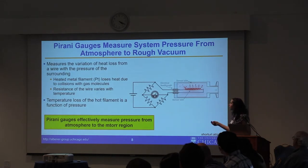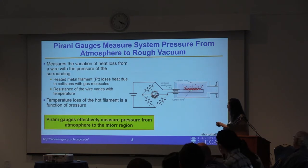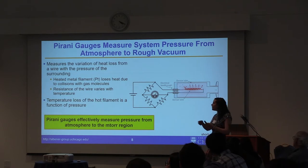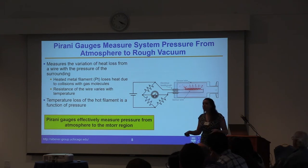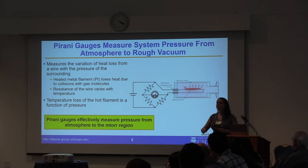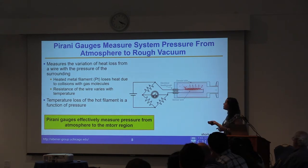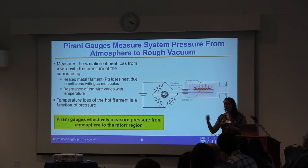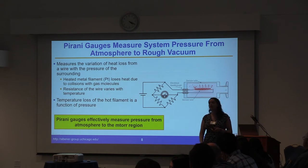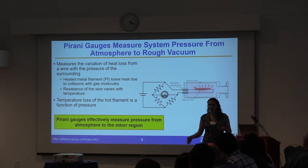The Pirani gauge works by having a metal filament inside. As gas molecules collide against the filament, there is heat loss or heat transfer. They have calibrations where the amount of heat loss equals a certain pressure, because a certain number of molecules will be hitting your filament in that regime. This directly correlates temperature loss to pressure, allowing measurement from atmosphere — where you'll have many collisions and a lot of heat transfer — down to mid or high vacuum where you'll have fewer collisions and less heat loss.